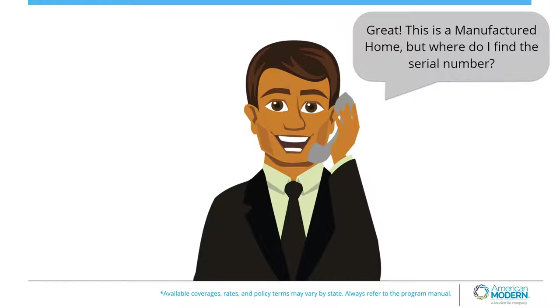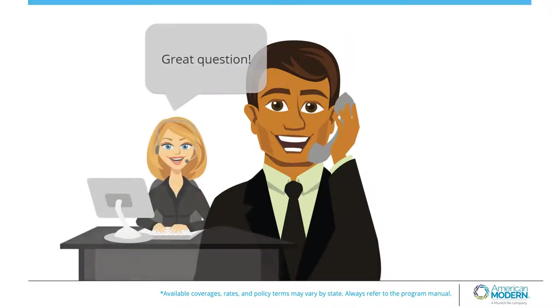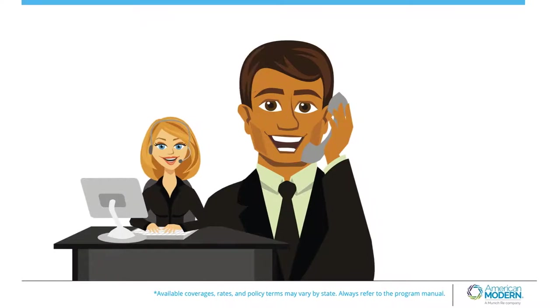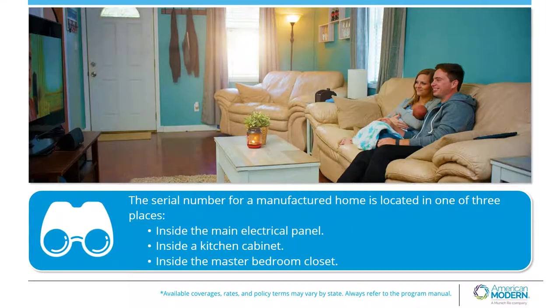Great, that means this is a manufactured home. But where do I find the serial number for the home? Great question! The serial number for a manufactured home is located in one of three places: inside the main electrical panel, inside a kitchen cabinet, or inside the master bedroom closet.